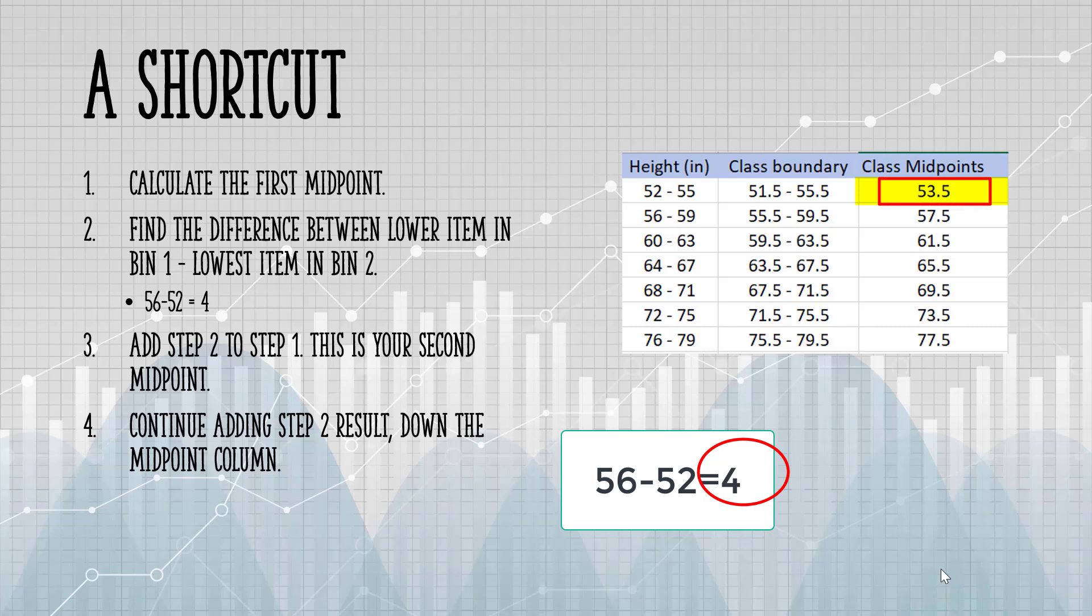In other words, you're going to add 4 to 53.5. That gives us 57.5. So I'm going to continue down the column, just adding 4. If I add 4 to 57.5, I get 61.5. If I add 4 again, I get 65.5. And so on down the column.